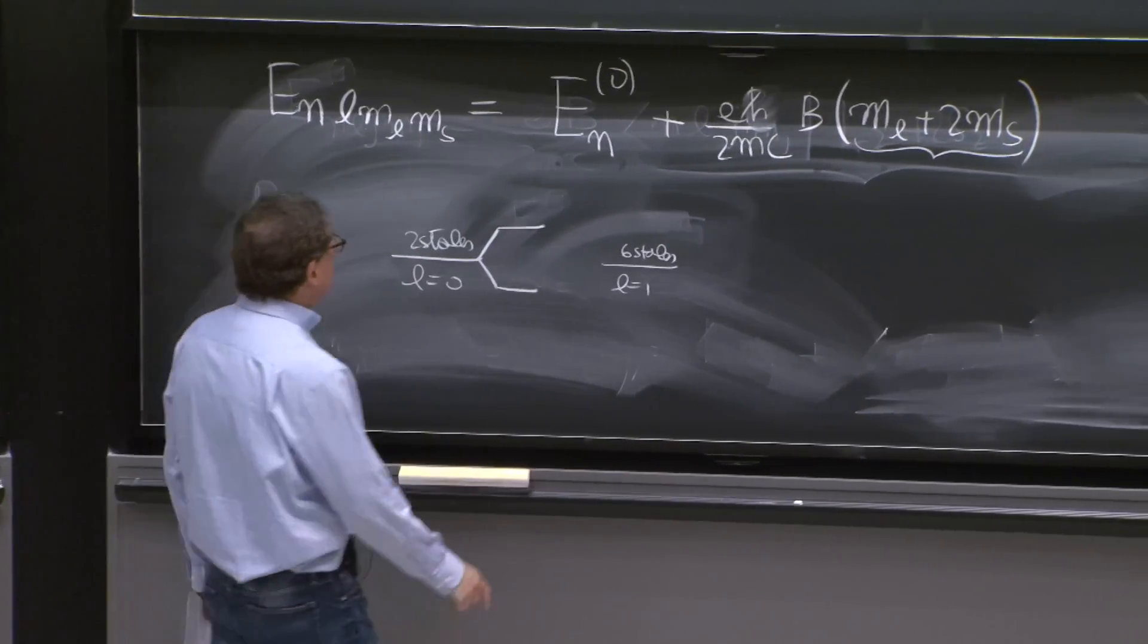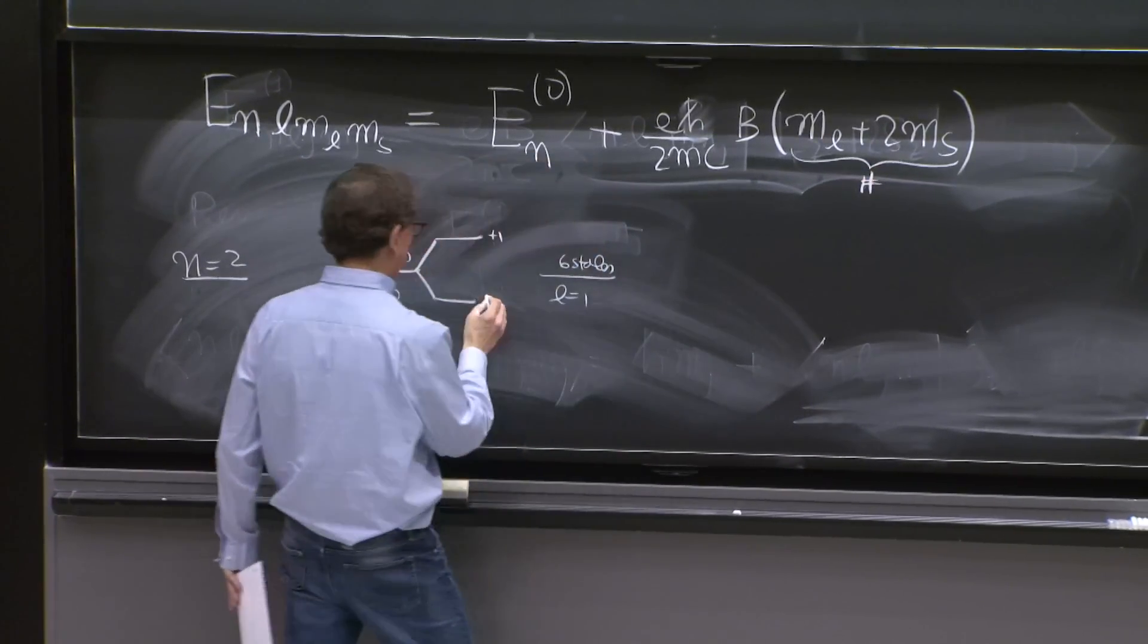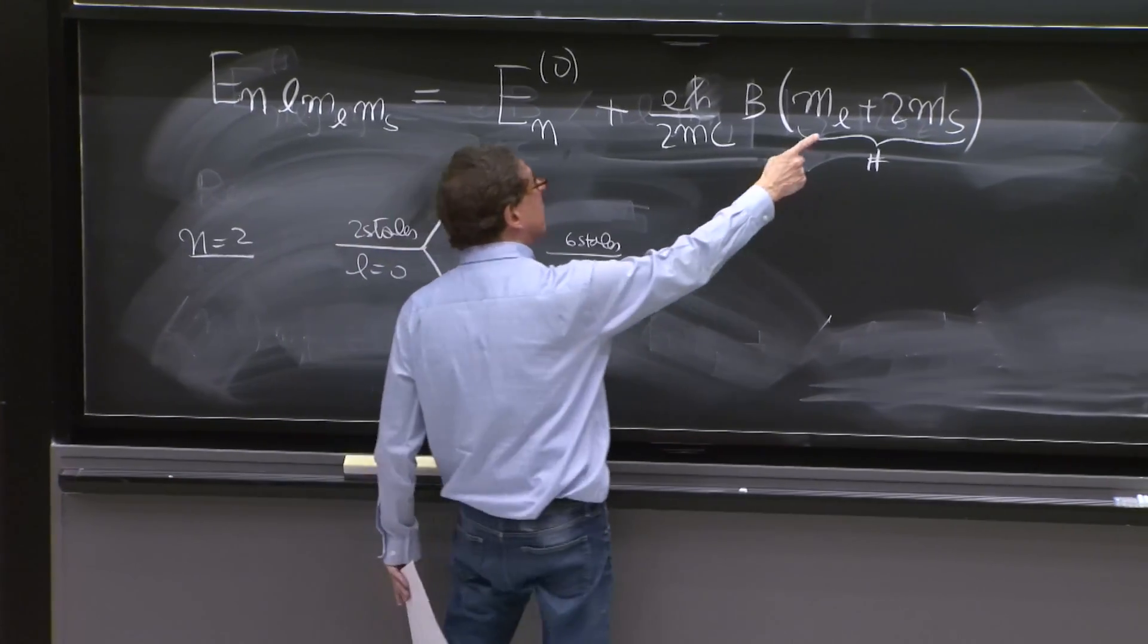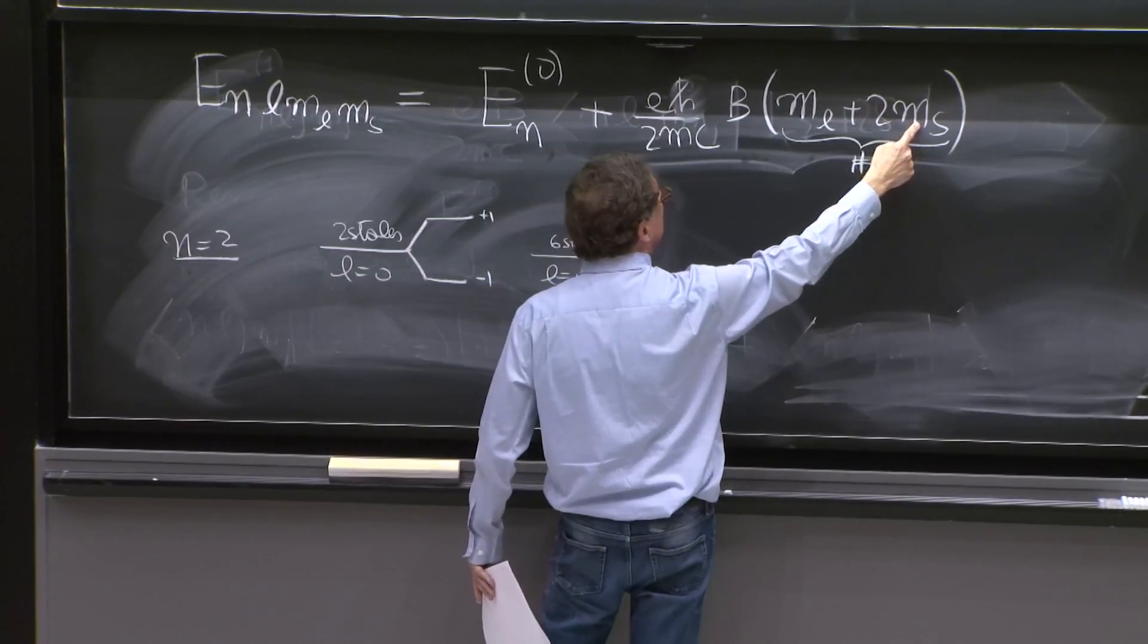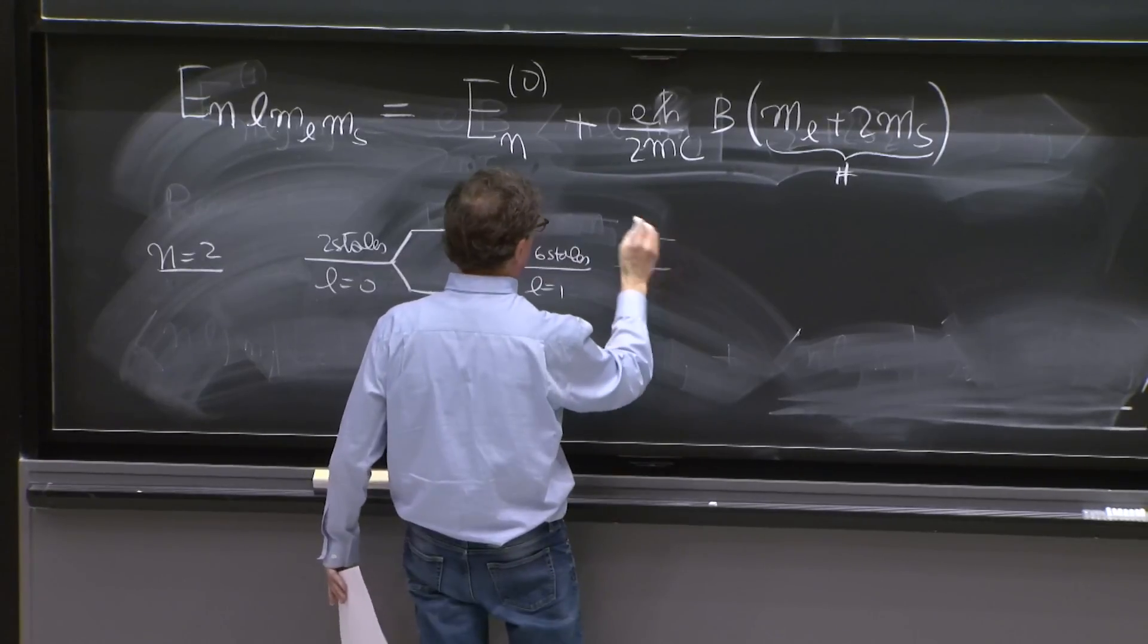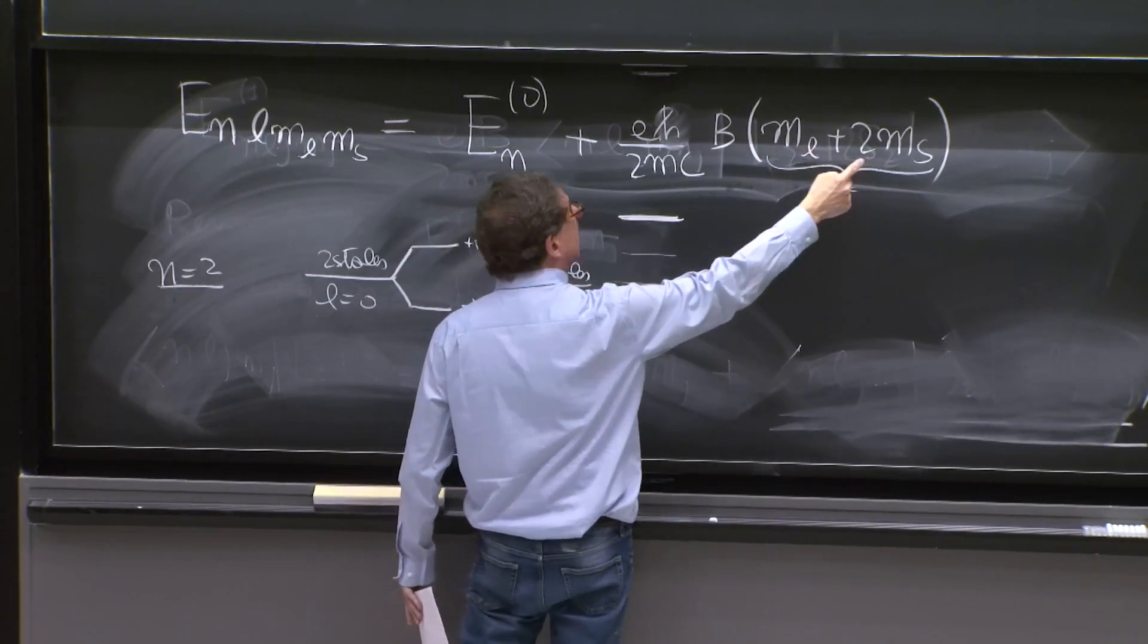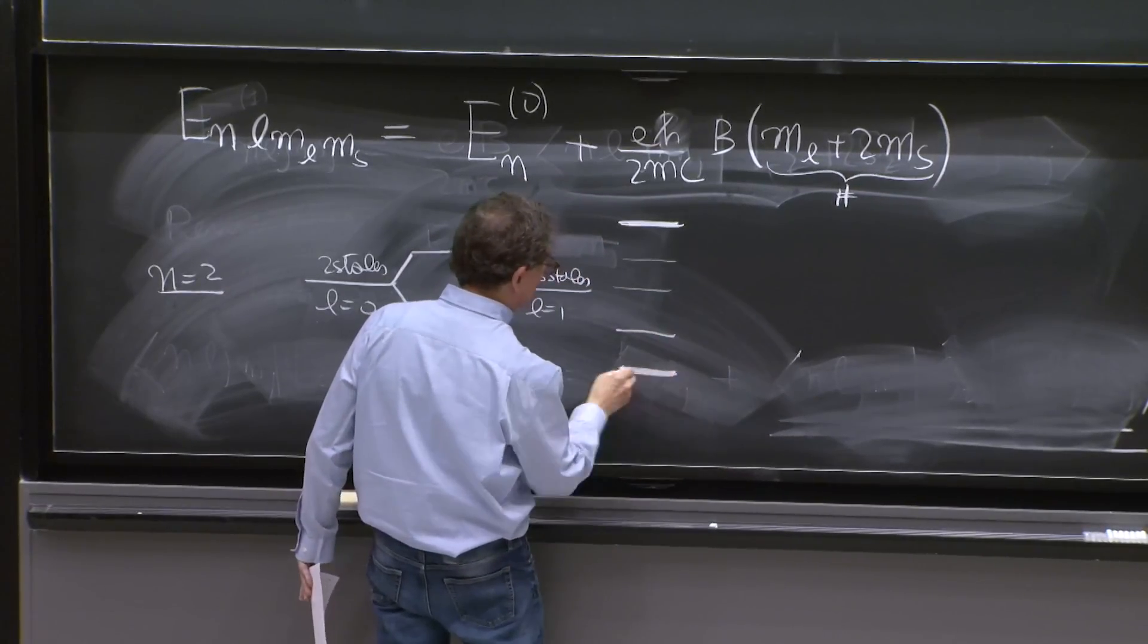And here, so this is plus 1 on this factor here, this number, or minus 1 for that number. For these states of l equals 1, ml, for example, can be 1 and ms plus 1 half. So 1 plus 1 is 2. So there's a state of 2. ml equals minus 1 and ms minus 1 half gives you minus 2. So that's another state.